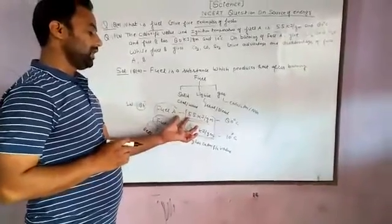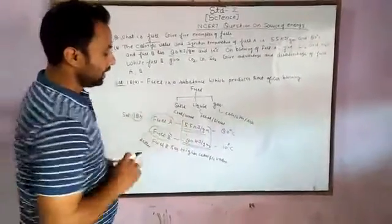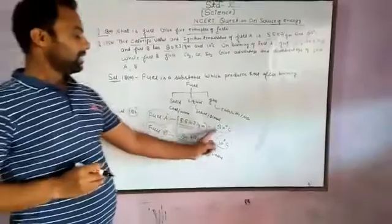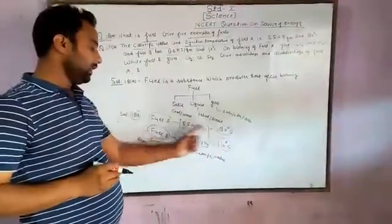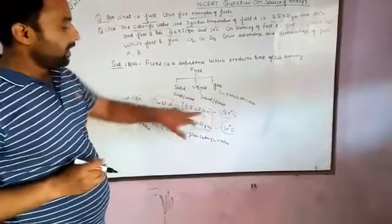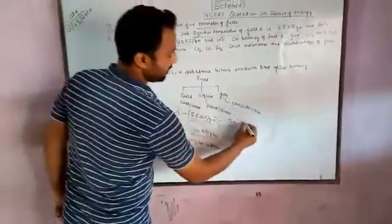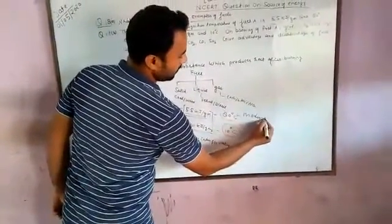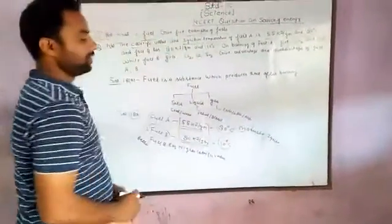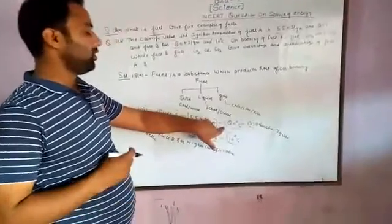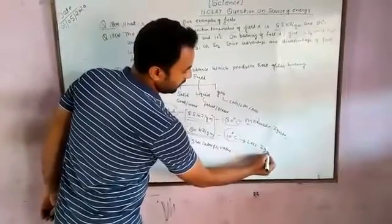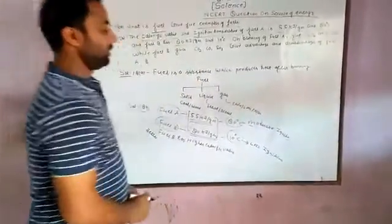This is the disadvantage of fuel A. Now we compare the ignition temperature. Fuel A has an ignition temperature of 80 degrees and fuel B has an ignition temperature of 10 degrees. Fuel A has a moderate ignition temperature, which is an advantage of fuel A. Fuel B has a lower ignition temperature, which is a disadvantage of fuel B.